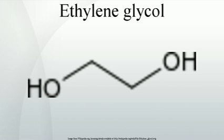Ethylene glycol is produced from ethylene via the intermediate ethylene oxide. Ethylene oxide reacts with water to produce ethylene glycol according to the chemical equation. This reaction can be catalyzed by either acids or bases, or can occur at neutral pH under elevated temperatures. The highest yields of ethylene glycol occur at acidic or neutral pH with a large excess of water.